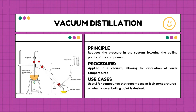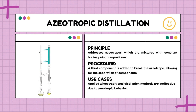The next type is azeotropic distillation. Azeotropic distillation is a method for separating mixtures with a constant boiling point by introducing a third component to disrupt their behavior and make separation possible. Azeotropes are tricky because they maintain a constant boiling point, making them difficult to separate using traditional methods. The principle is to introduce a third component that disrupts or breaks this azeotropic behavior.